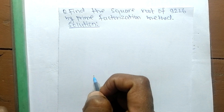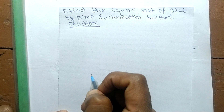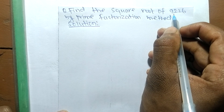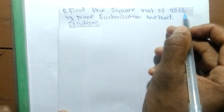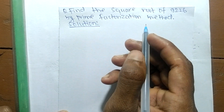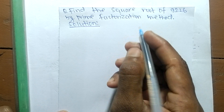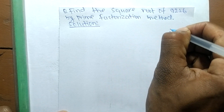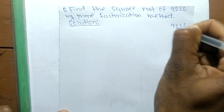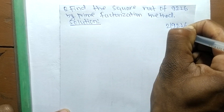Today in this video we shall learn to find out the square root of 9216 by prime factorization method. First, we shall find out the prime factors of 9216.